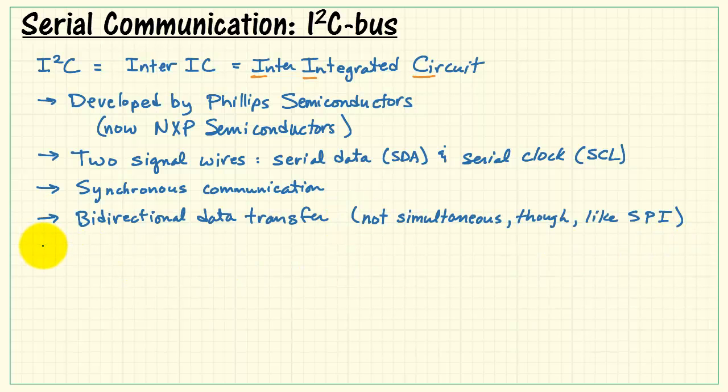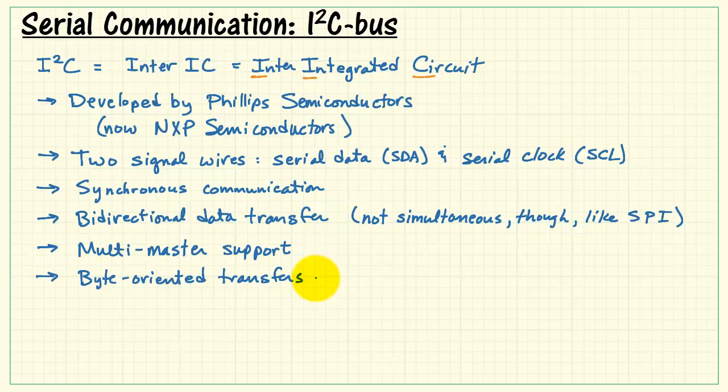I2C bus supports bi-directional data transfer, although it's not simultaneous as in SPI, for example. It supports multiple master devices, and all data transfers are byte-oriented, that is 8 bits.